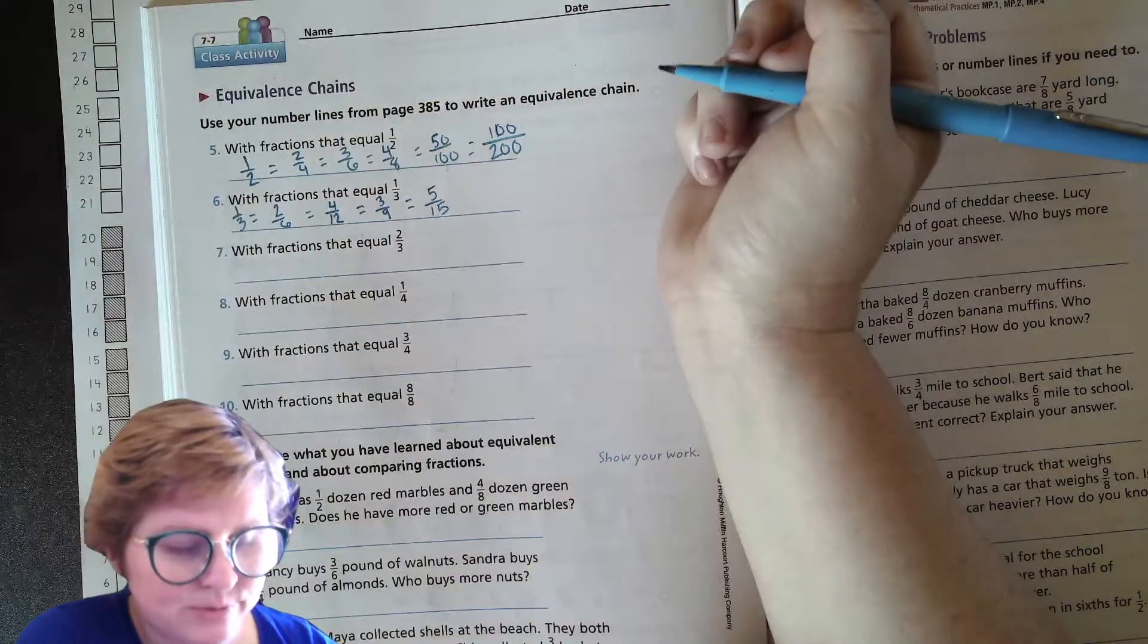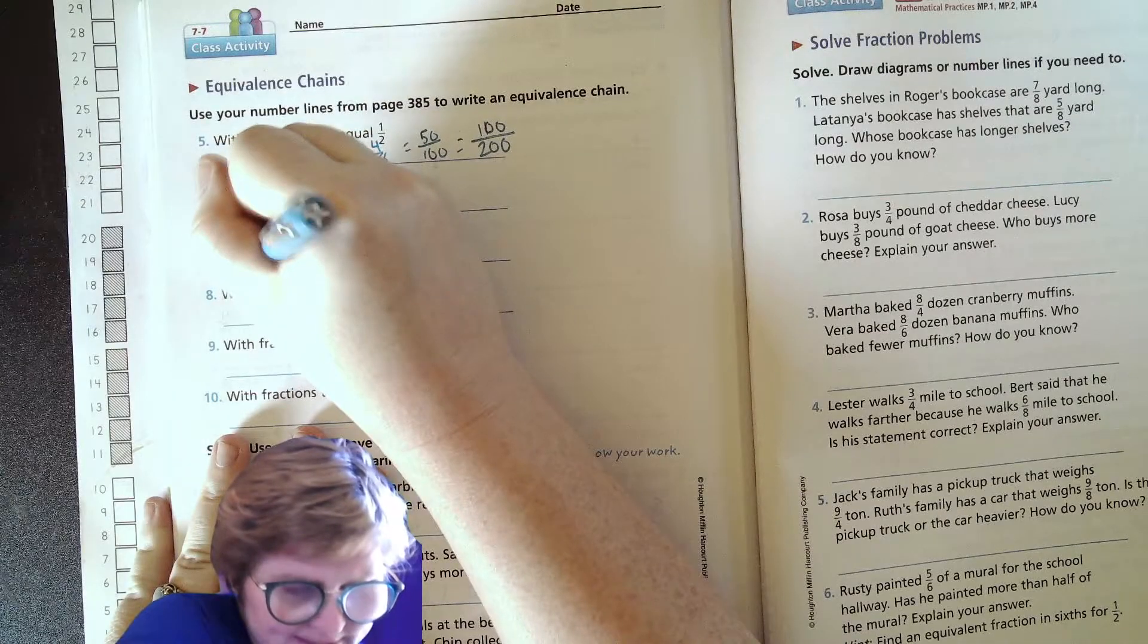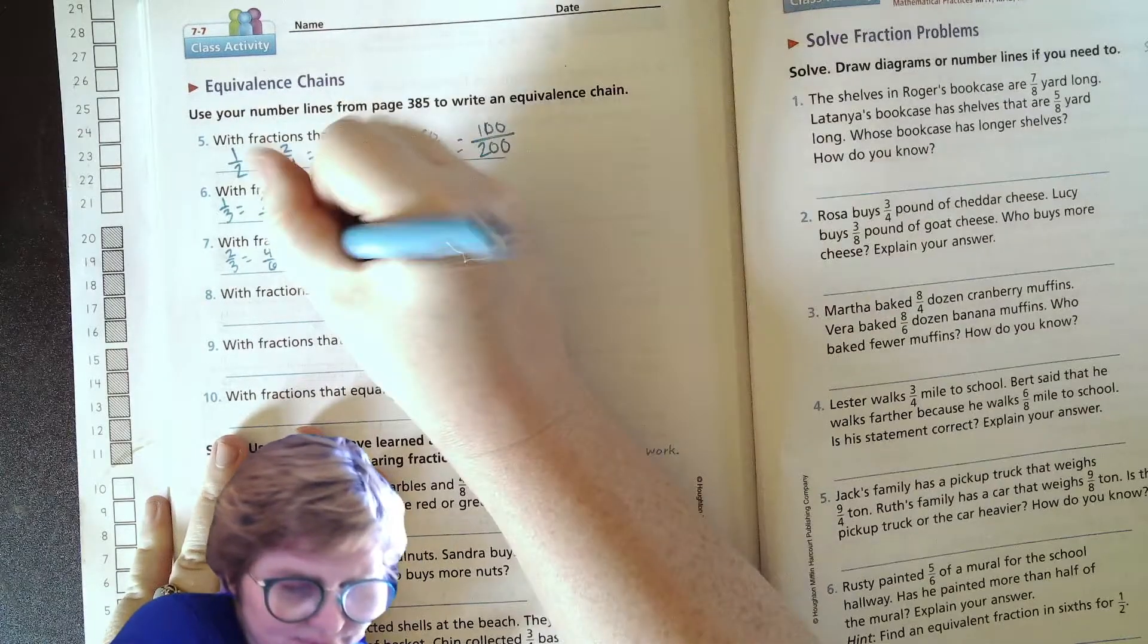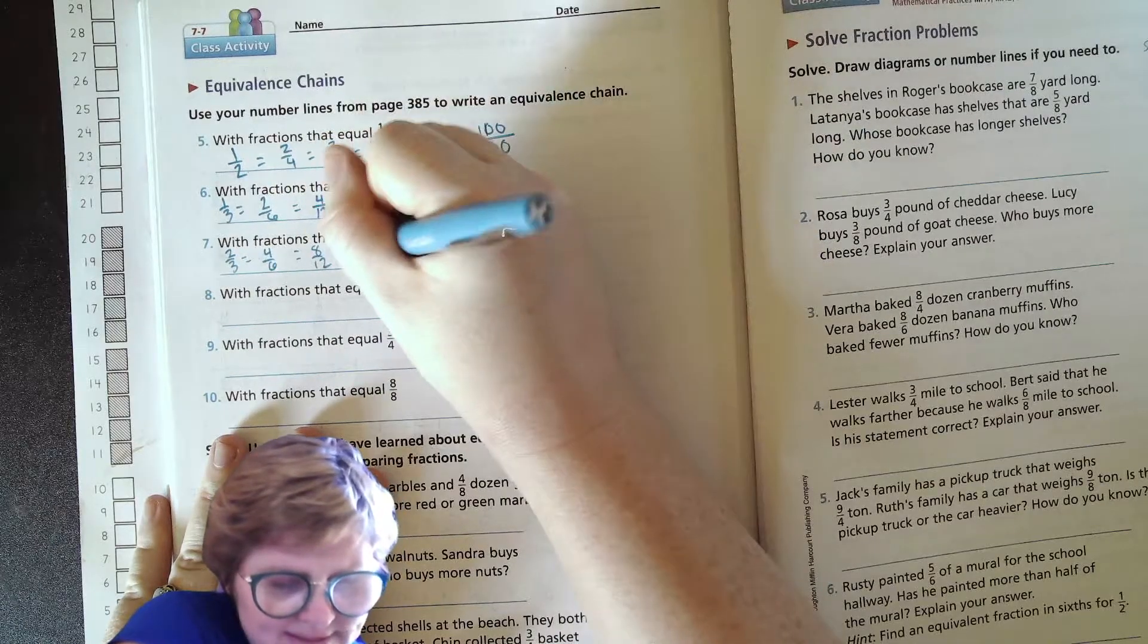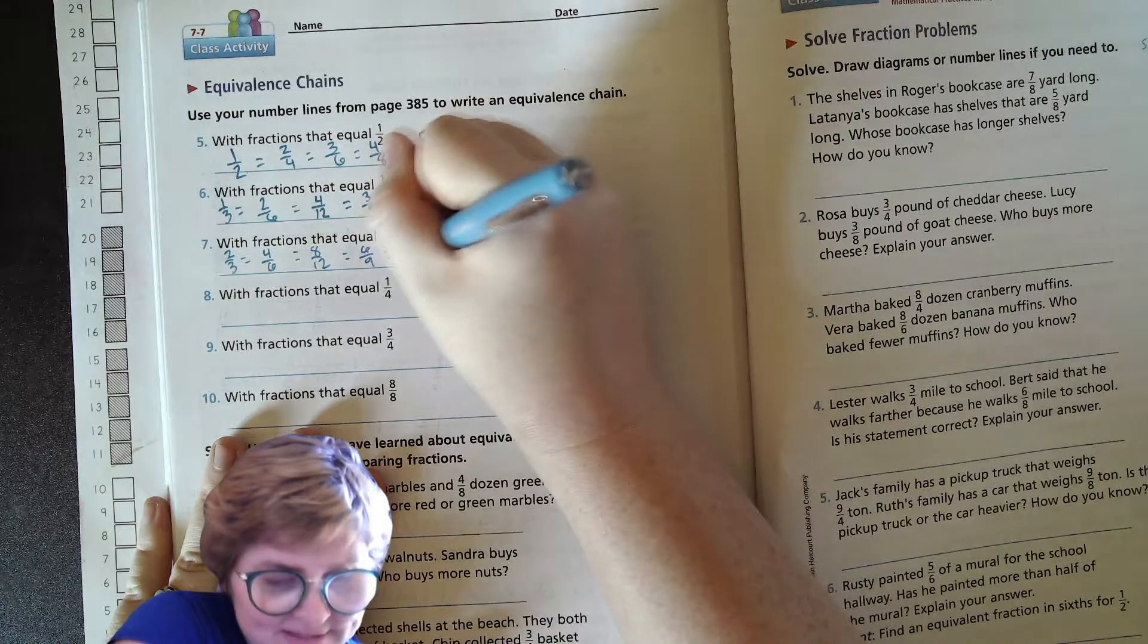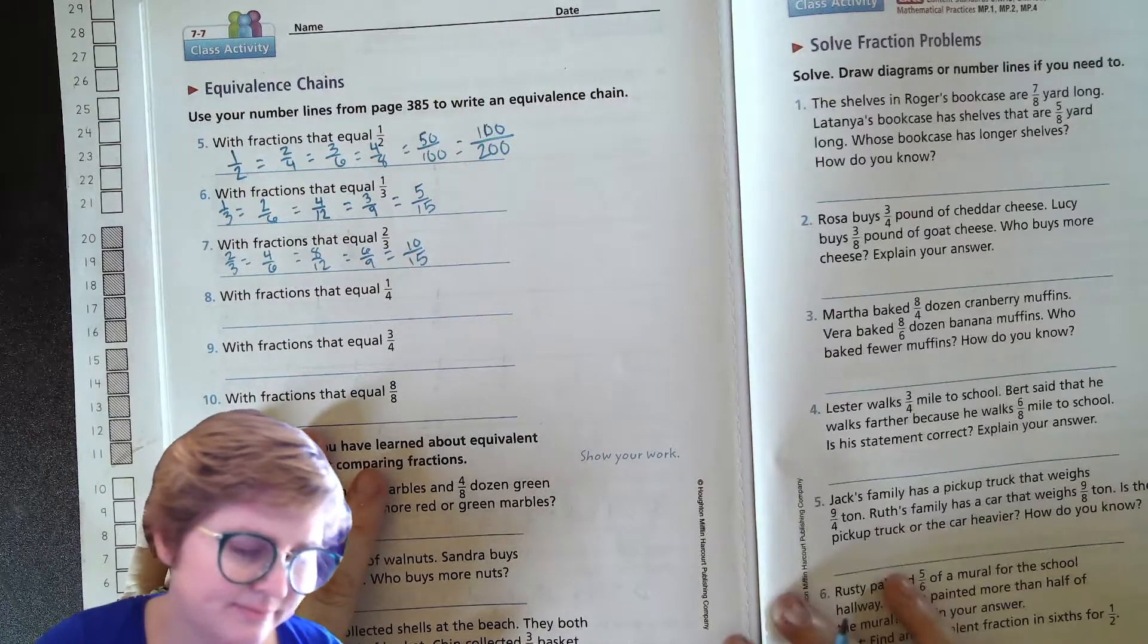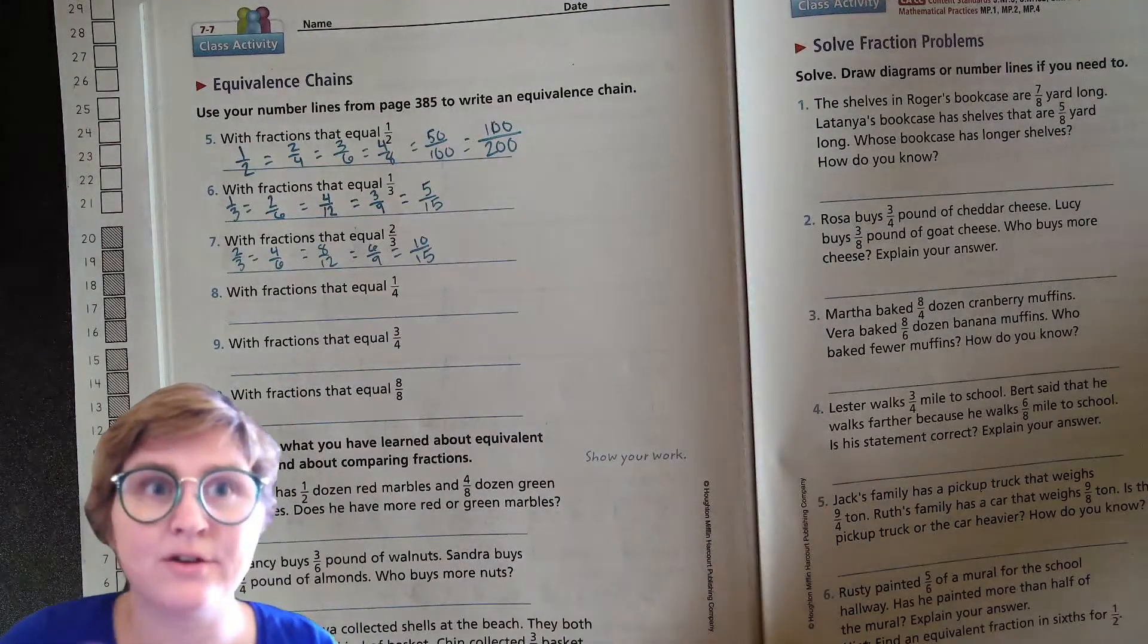Okay, fractions that equal two-thirds. We're just going to double all these, right? So two-thirds equals four-sixths, doubling the numerator, equals eight-twelfths, equals six-ninths, equals ten-fifteenths. And there are more for these - I'm not listing all of them. There are plenty more.